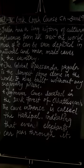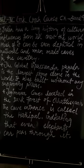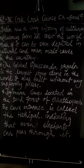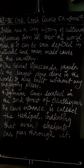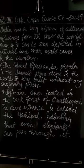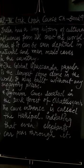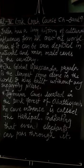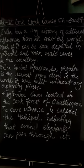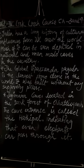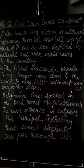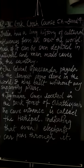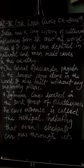The Global Vipassana Pagoda is the largest dome in the world, built without any supporting pillars. The Jogi Mara Caves are located in the dense forest of Chhattisgarh, and its entrance — called Hathi Pal — is large enough for elephants to pass through.